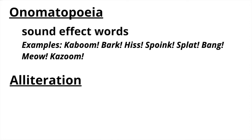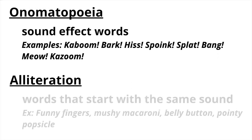Onomatopoeia are sound effect words like kaboom, bark, hiss, spoink, splat, bang, meow, kazooom. They're the kind of words that you'll find in comic books. Alliteration are words that start with the same sound, like funny fingers, mushy macaroni, belly button, and pointy popsicle. They're the kind of words that you'll find in a tongue twister.